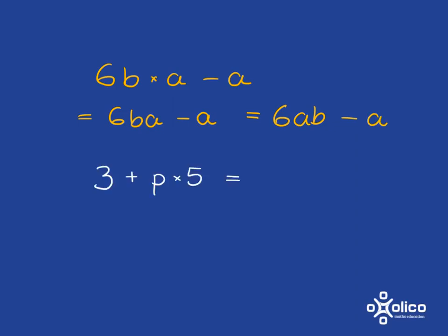And say we had something like 3 plus p times 5. Again, we have to do multiplication first. So we could write this as 3 plus, and we could write p5 because in algebra we don't write the multiplication sign. But also in algebra, where we have a letter and a number, we prefer to put the number first. So we'd rather write it as 3 plus 5p.